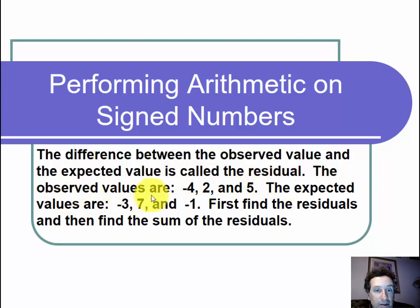The observed values are negative 4, 2, and 5. The expected values are negative 3, 7, and negative 1. First find the residuals and then find the sum of the residuals.